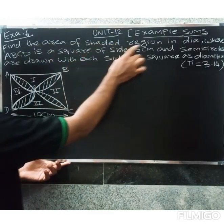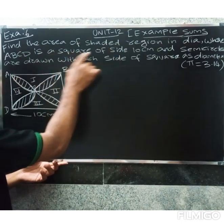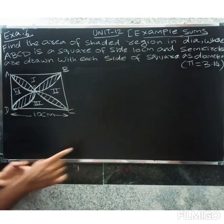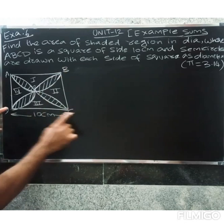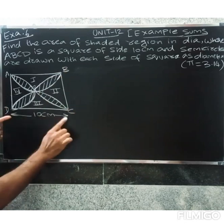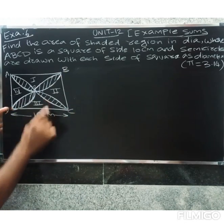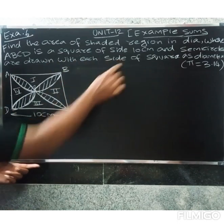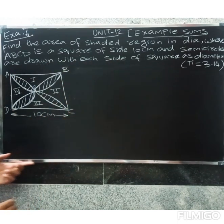Find the area of the shaded region in a diagram where ABCD is a square with side 10 cm. That is the shaded region, and semicircles are drawn with each side of the square as diameter.